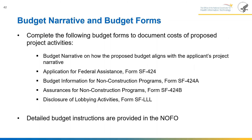For the budget narrative and budget form, applicants must complete the following to document costs: the budget narrative explaining how the proposed budget aligns with the project narrative; Form SF-424 Application for Federal Assistance; Form SF-424-A Budget Information for Non-Construction Programs; Form SF-424-B Assurances for Non-Construction Programs; and Form SF-LLLL Disclosure of Lobbying Activities. Detailed budget instructions are provided in the Notice for Funding Opportunity.